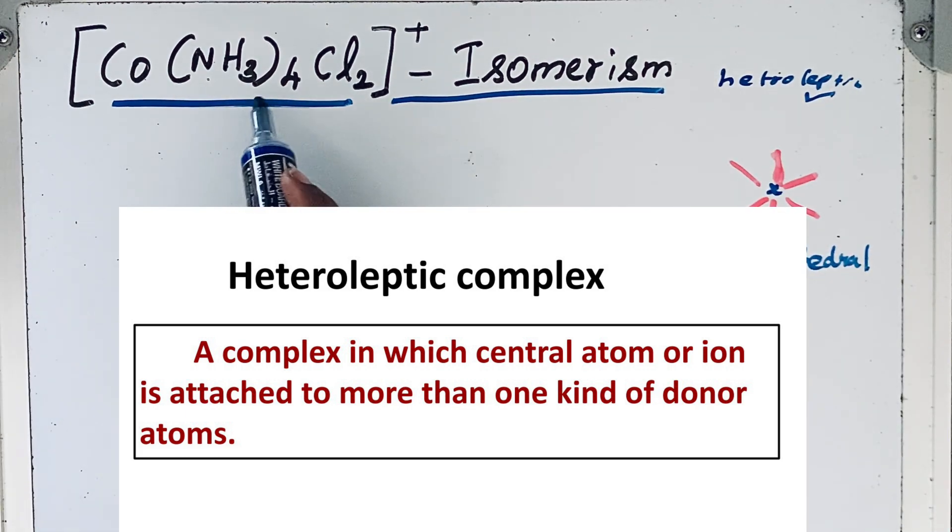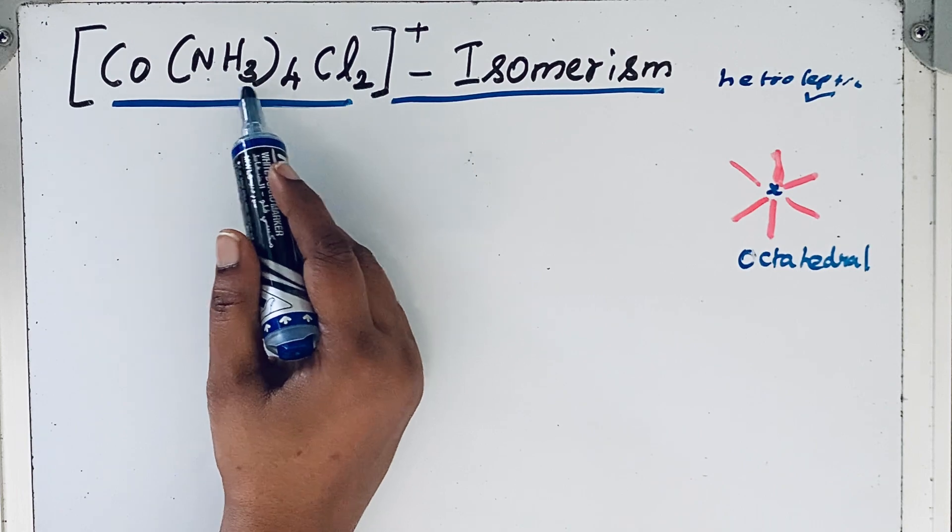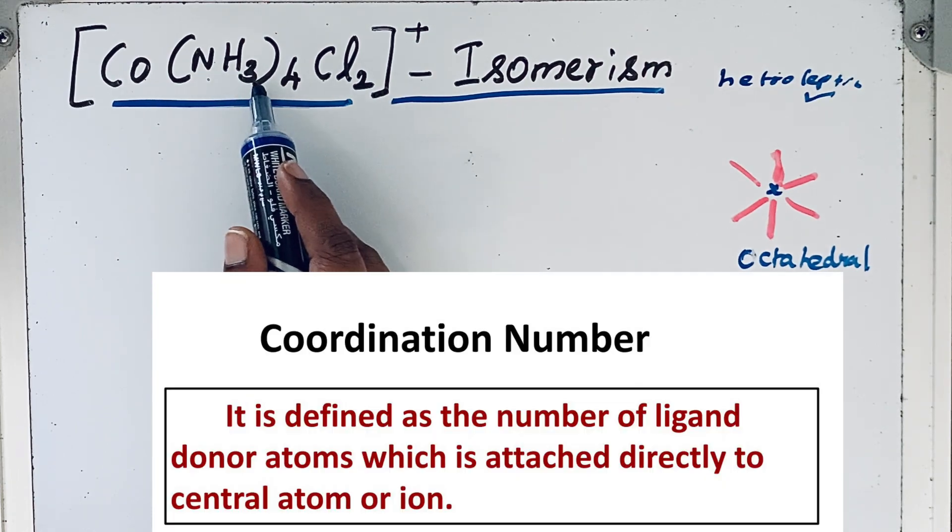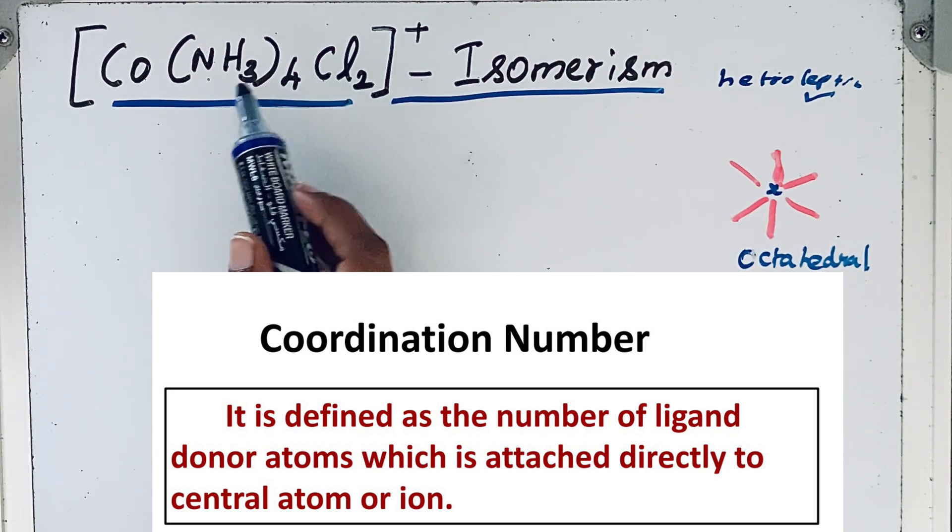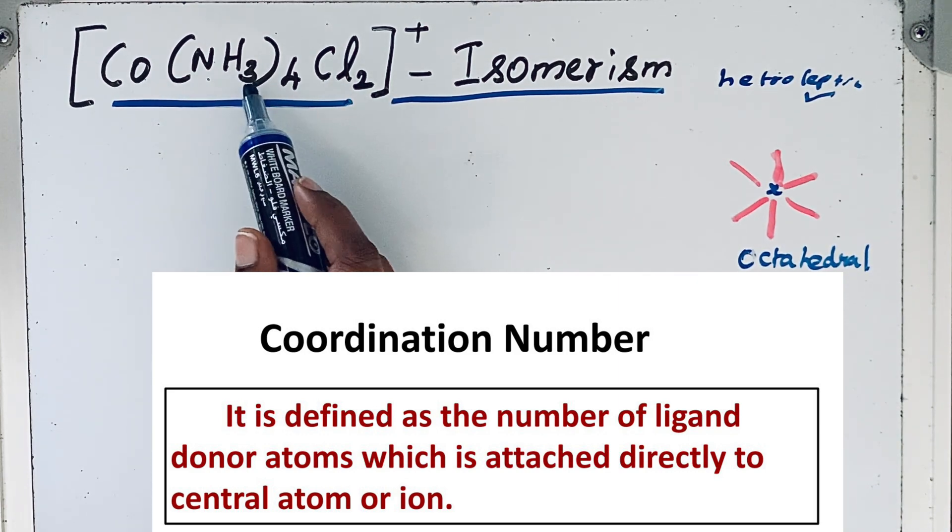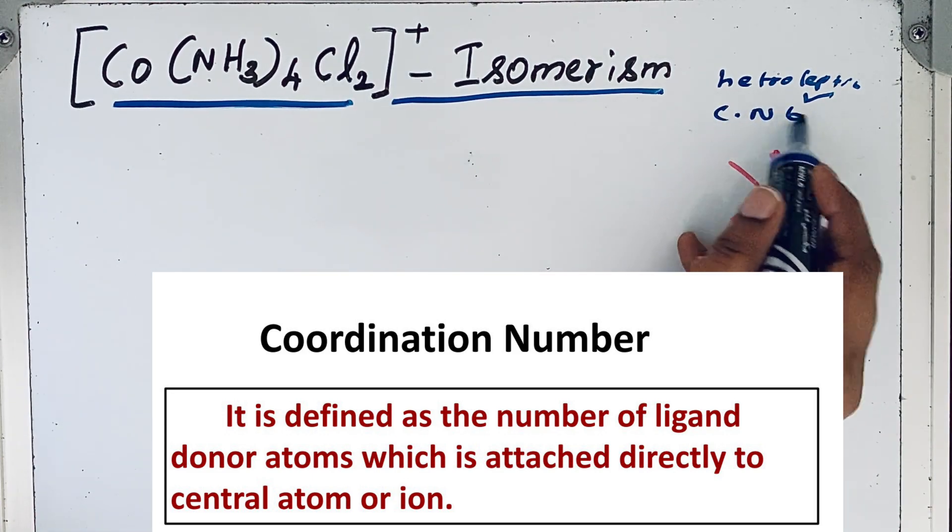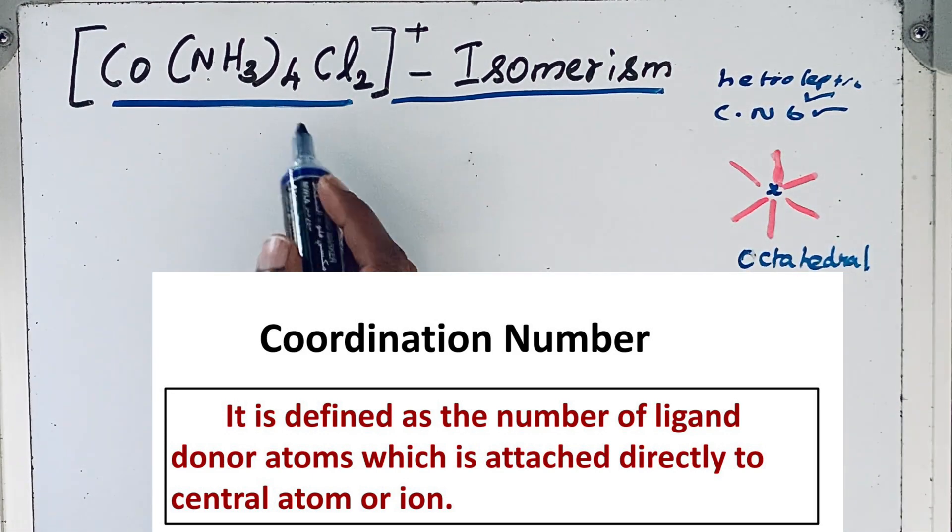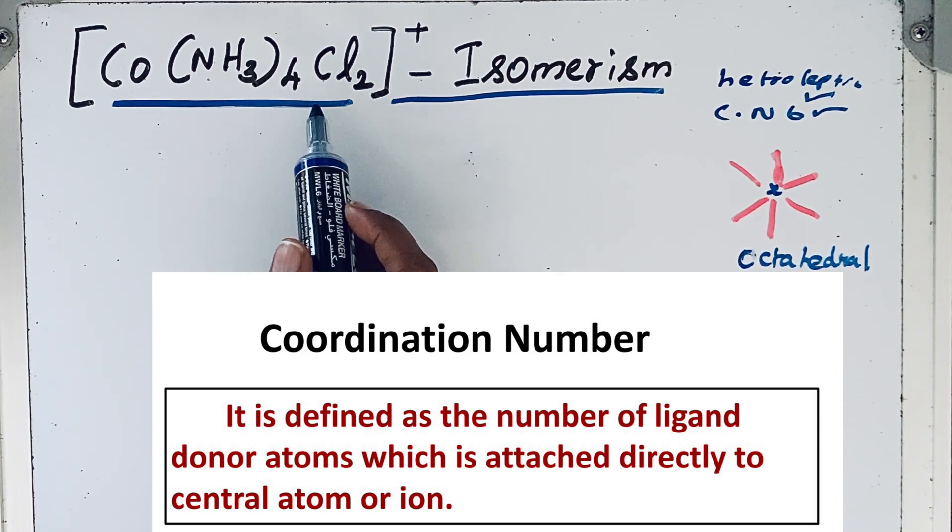The second condition is the coordination number must be four or six. If you look at this, here there are four NH3 groups and two chlorine groups. So the coordination number is four plus two, which is six. So the second condition is also fulfilled. So this compound can undergo geometrical isomerism.